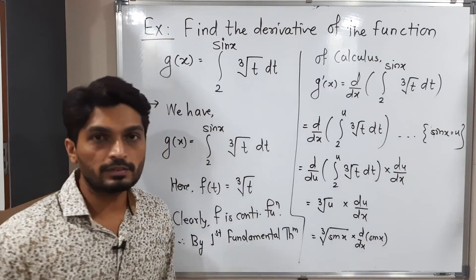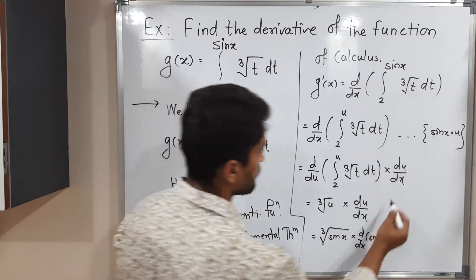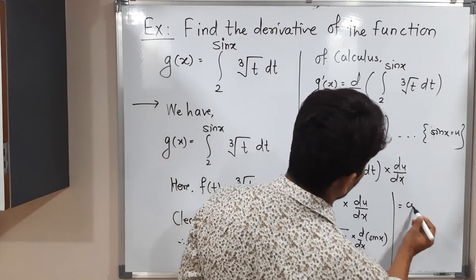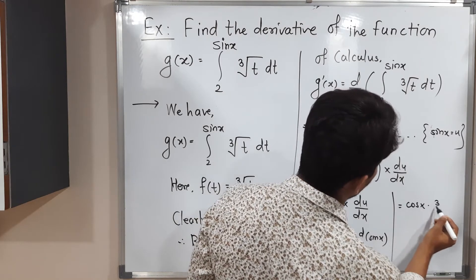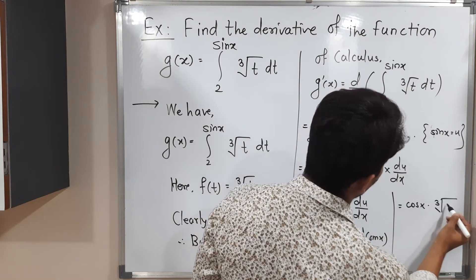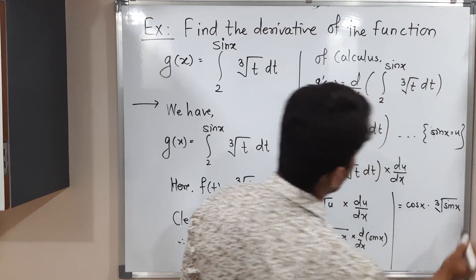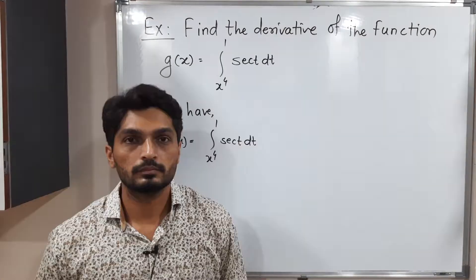The derivative of sin x is cos x. Therefore the answer is cos x times the cube root of sin x. This is the required answer.